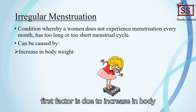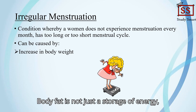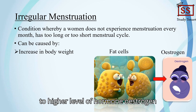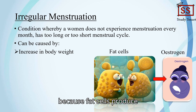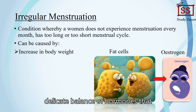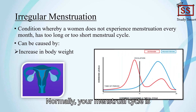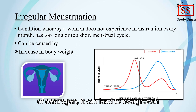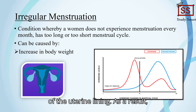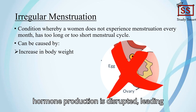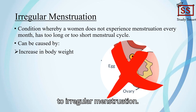The first factor is an increase in body weight. Body fat is not just a storage of energy — it also plays a role in hormone production. Increased body fat can lead to higher levels of estrogen because fat cells produce estrogen. This extra estrogen can disrupt the delicate balance of hormones that regulate the menstrual cycle. Normally, the menstrual cycle is regulated by a precise balance of estrogen and progesterone. Too much estrogen can lead to overgrowth of the uterine lining, which can delay or prevent ovulation. Without ovulation, the regular cycle of hormone production is disrupted, leading to irregular menstruation.